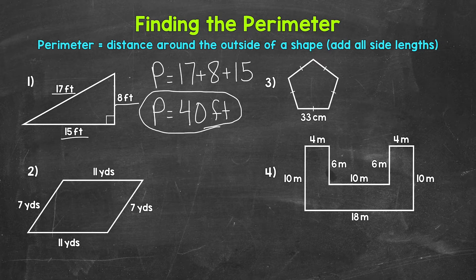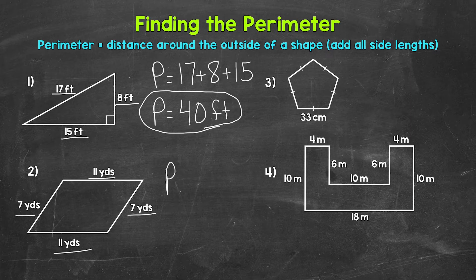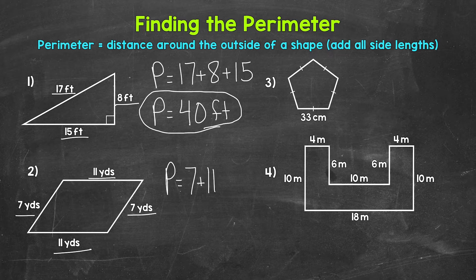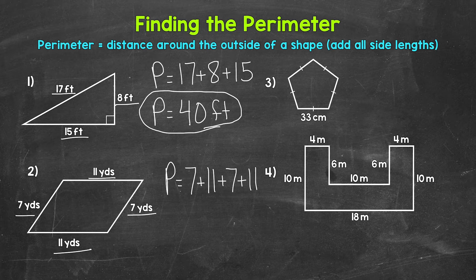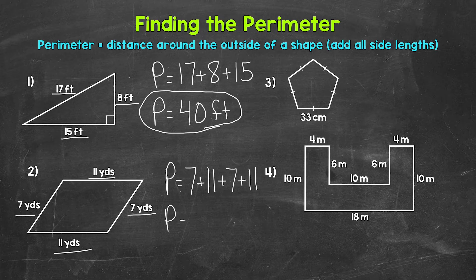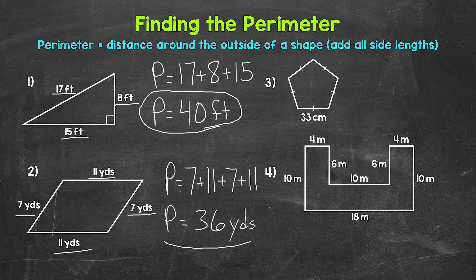Let's move on to number two, where we have a parallelogram. Let's find the perimeter. So we have 7 yards plus 11 yards plus 7 yards plus 11 yards. So the perimeter equals 7 yards plus 11 yards plus 7 yards plus 11 yards. 7 plus 11 is 18, plus 7 is 25, plus 11 gives us a perimeter of 36 yards.